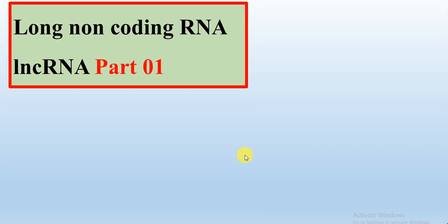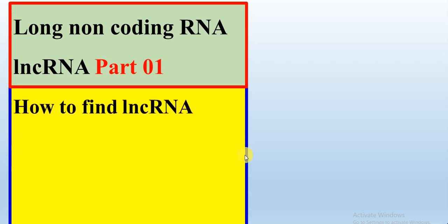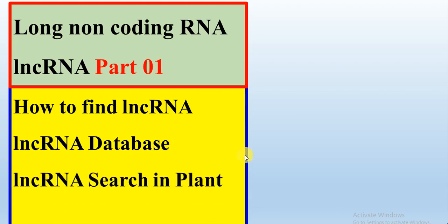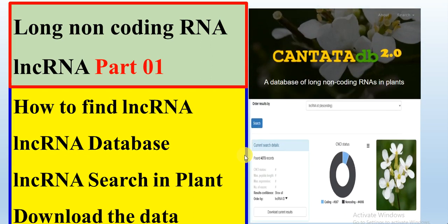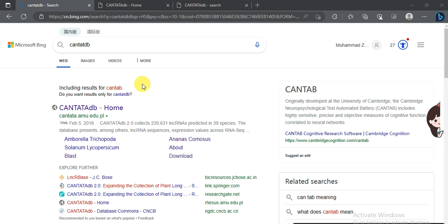In this video we will talk about long non-coding RNAs, or simply lncRNA, and this is Part One. We will discuss how to find long non-coding RNAs, what database is available, and how to search different plant species in that database — including how many lncRNAs each plant species has and how to download that data using the CANTATA database.